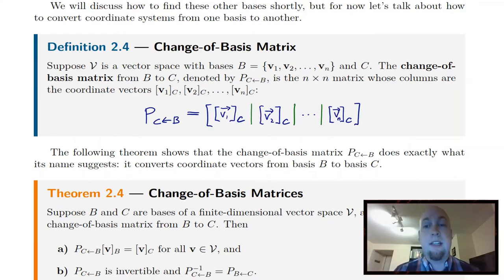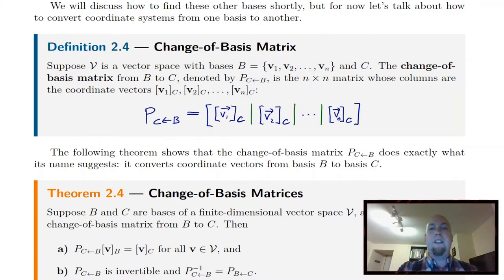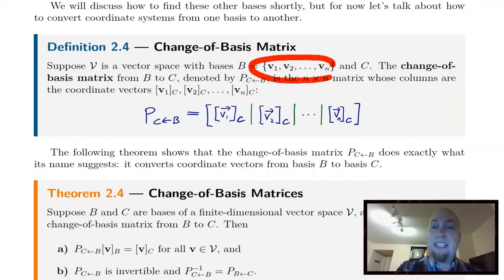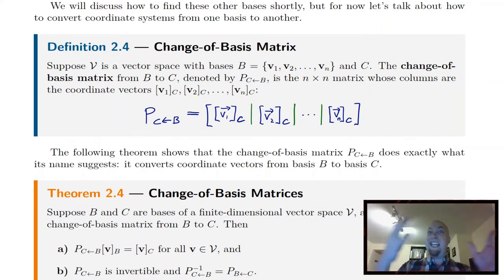What the matrix actually is: it's the matrix that has as its columns the coordinate vectors of the old basis vectors v1 up to vn from B, represented in the new basis C. So what you're doing is taking the old basis and representing it in the new basis, then sticking those coordinate vectors in as columns. That gets you a matrix that converts any coordinate vector from the old basis B to the new basis C.